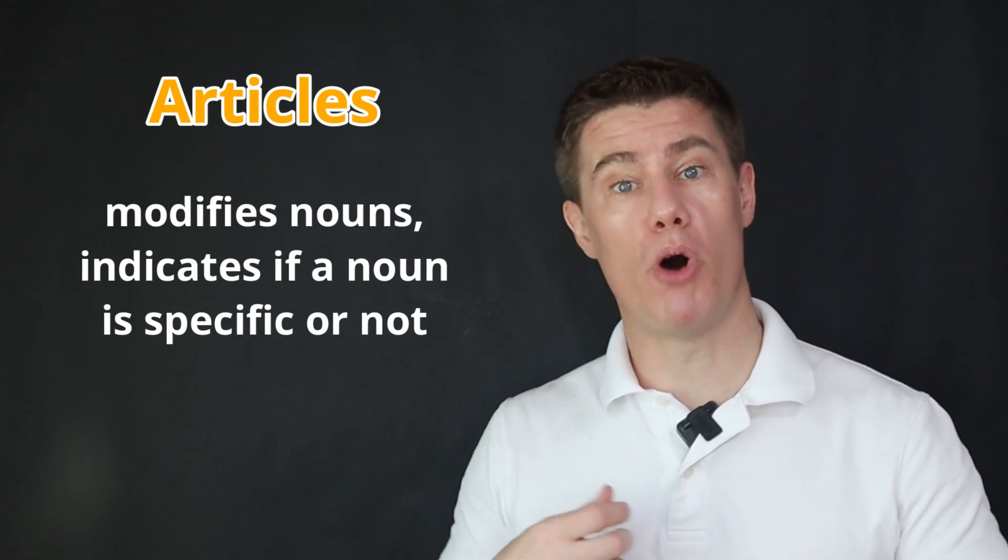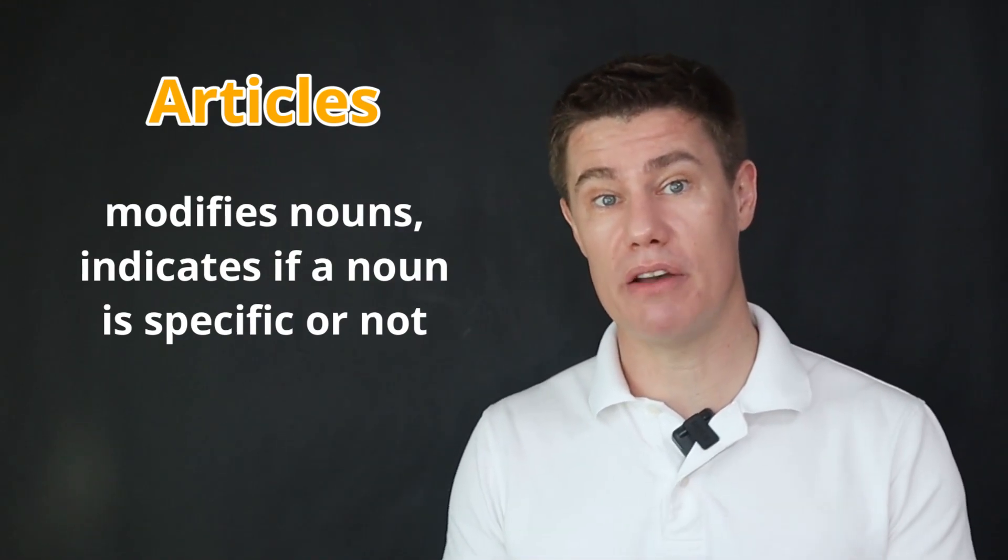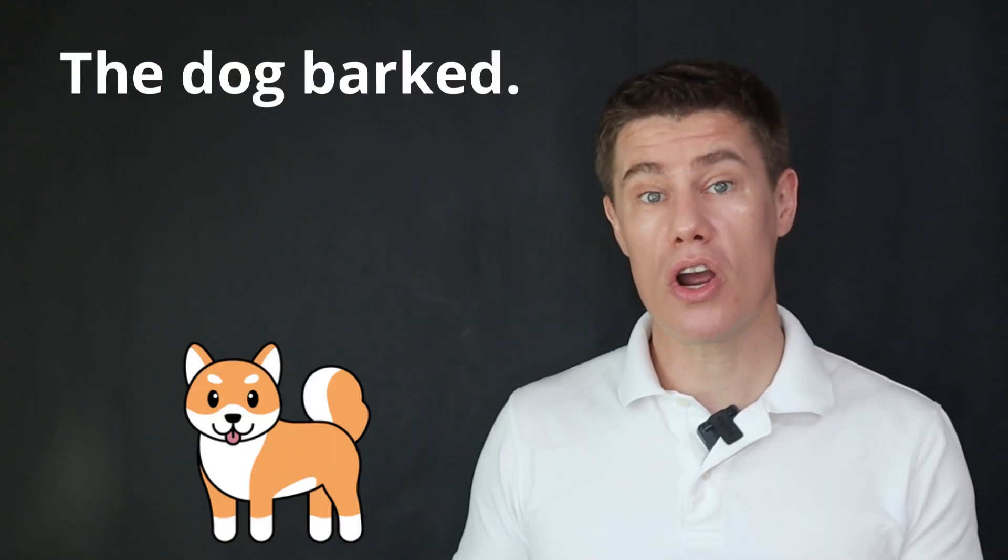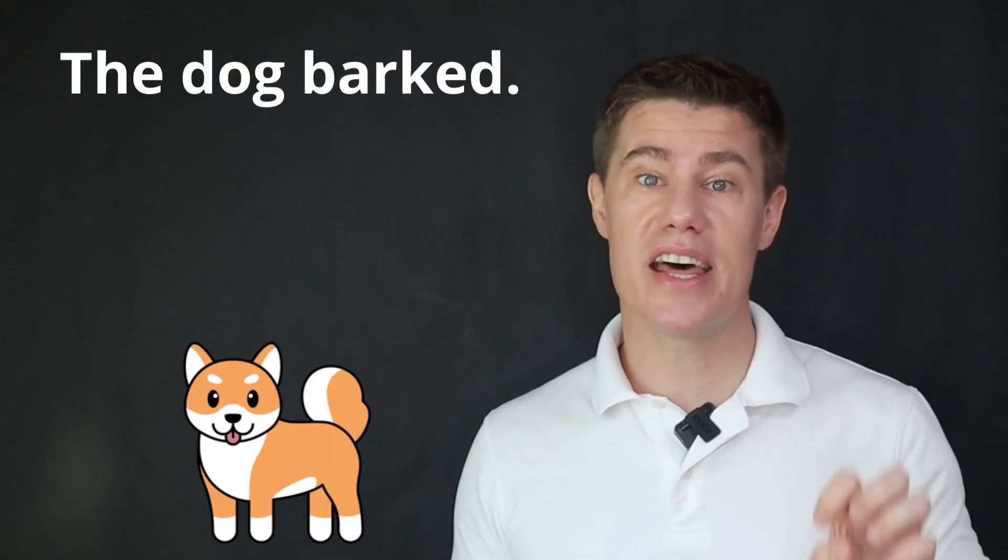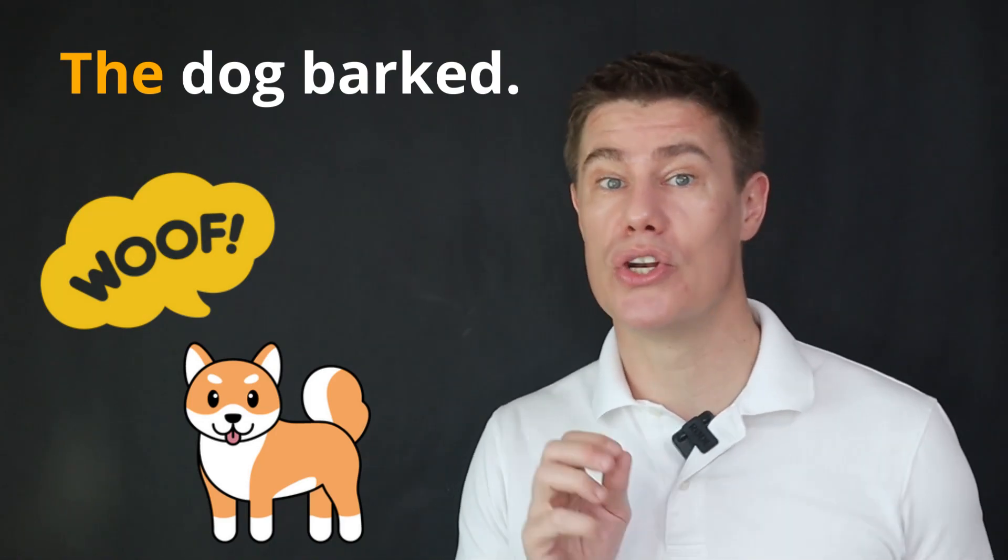Articles: words used to modify nouns and indicate whether the noun is specific or general. The dog barked. Here the is the article because it modifies the noun dog.